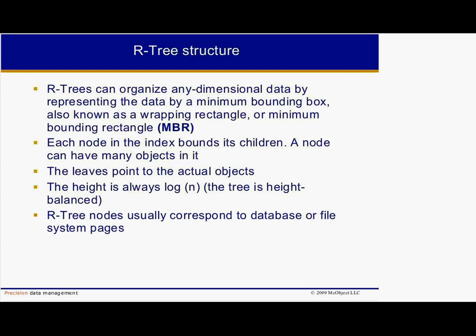Each node in the index bounds its children. Like the nodes of other index types, a node can have many objects in it. The leaves of the tree point to the actual objects. The height is always log n, and the tree is height balanced. As with other tree indexes, the R-Tree nodes usually correspond to database or file system pages.